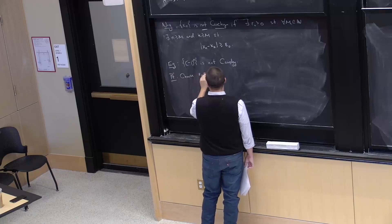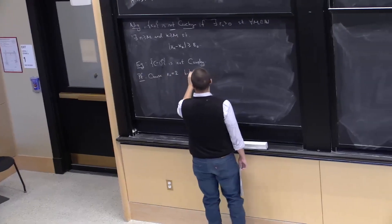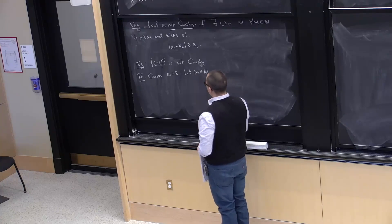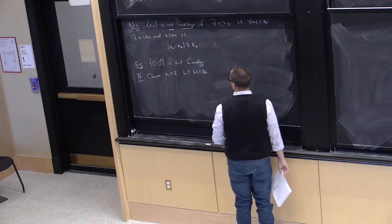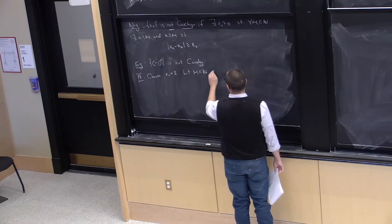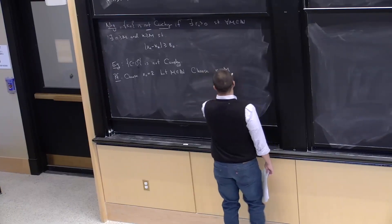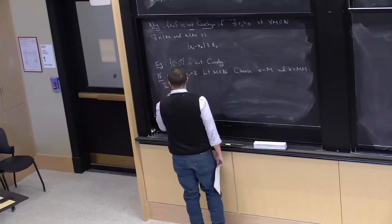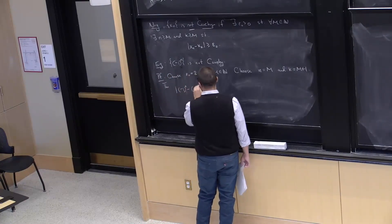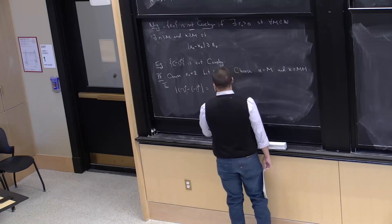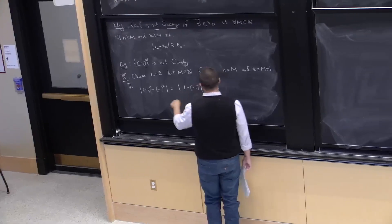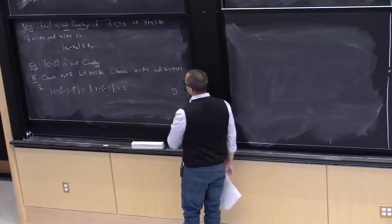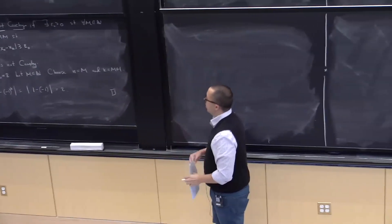Here's the proof that (−1)^n is not Cauchy. Choose epsilon_0 = 2. Let M be any natural number. Choose n = M and k = M+1, so both are ≥ M. Then |(−1)^n − (−1)^k| = |(−1)^M − (−1)^(M+1)| = |1 − (−1)| after factoring out (−1)^M, which equals 2. Therefore (−1)^n is not Cauchy.